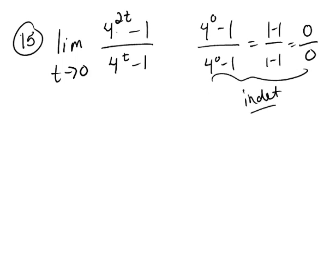So let's be clever. Let's factor 4 to the 2t minus 1. You have to recognize that as the difference of two squares.